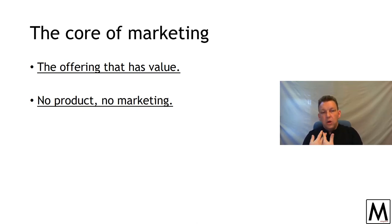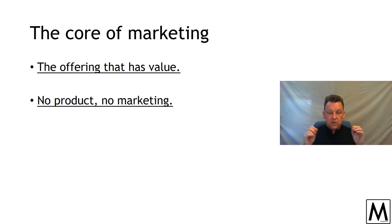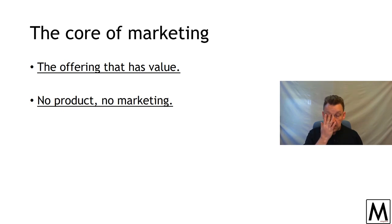At the heart, you need to have a product to do marketing. You can use different elements of the marketing mix and different component pieces, but if you don't have a product back at the center, you don't have marketing taking place. That's one of the most important things to factor in — there has to be a product.